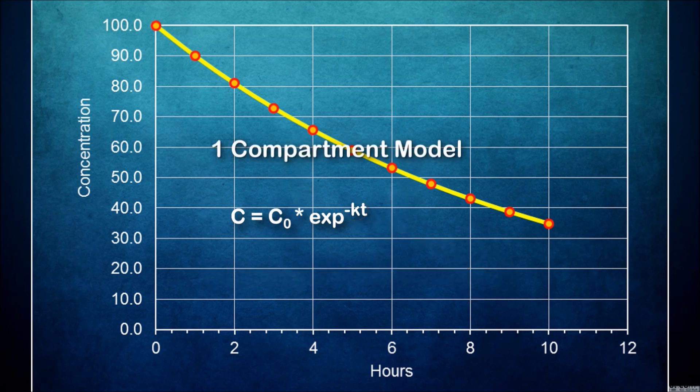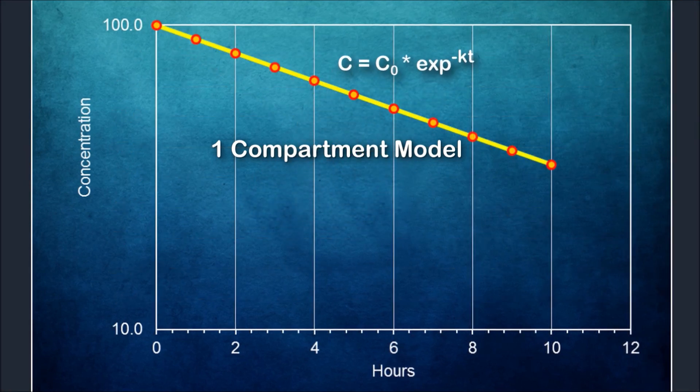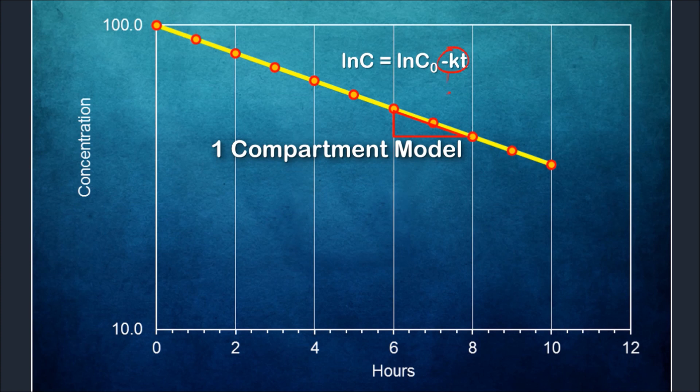This exponential shape of the elimination profile is actually quite common for many drugs. This kind of mono-exponential decline in drug concentrations is called a one-compartment model. This is because mathematically, it is conceived that everything occurs within a single mathematical compartment. Now this is the curved line. But if we plot this exponential curve on the log concentration axis, we can make the curve into a straight line. The slope of this line will then be equal to k, the elimination rate constant.